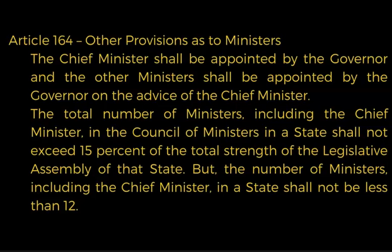Under Article 164, other provisions as to ministers: the Chief Minister shall be appointed by the Governor and the other ministers shall be appointed by the Governor on the advice of the Chief Minister. The total number of ministers including the Chief Minister in the Council of Ministers in a state shall not exceed 15 percent of the total strength of the Legislative Assembly of the state, but the number of ministers including the Chief Minister shall not be less than twelve.